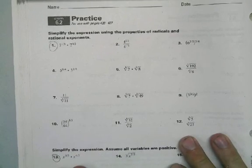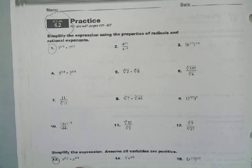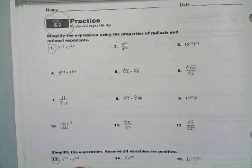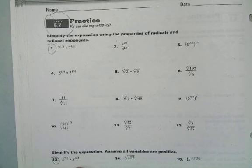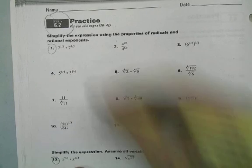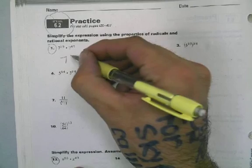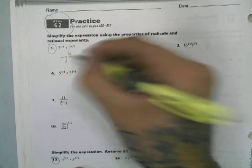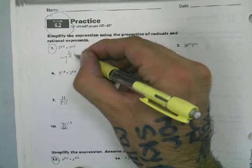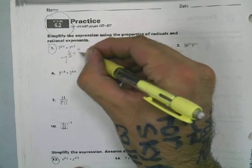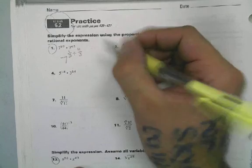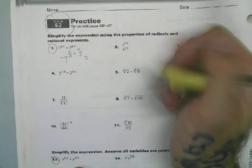All right, so now we're talking about 6.2 and we have 7^(1/3) times 4^(1/3). Well what happens there? We add them so it's going to be 7^(1/3) plus 4/3. Oh thank goodness that we have common denominators and that's going to equal...